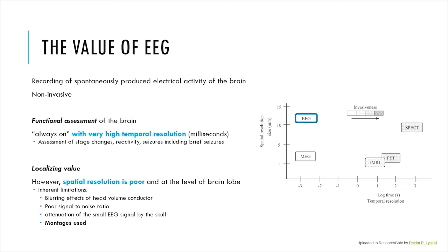There are inherent limitations in the EEG. There is the blurring effect of the head volume conductor, with the brain being round and electrical activity produced everywhere. There is poor signal-to-noise ratio because the electrical activity of the brain is very small and easily affected by muscle activity or other electrical disturbances in the room. There is also attenuation of the small EEG signal by the scalp and by the skull. The montages used have an effect on how well we can localize where a discharge is coming from on the EEG.